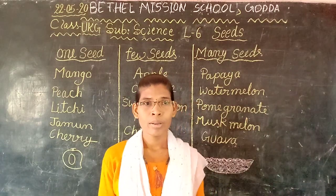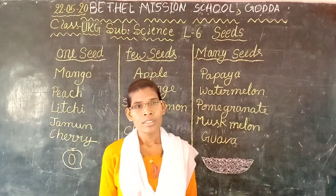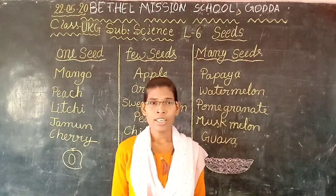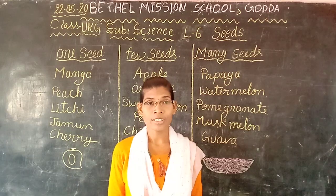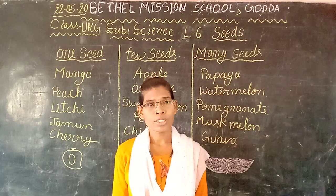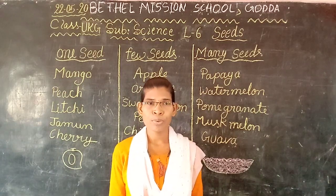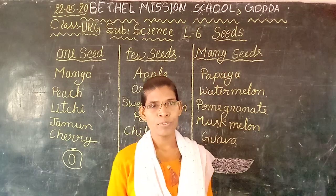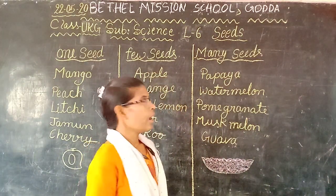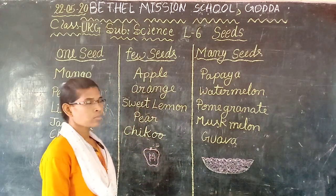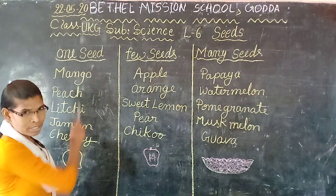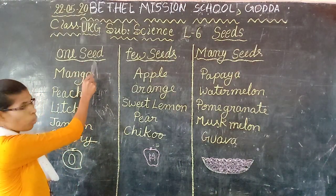Children, you have eaten many different kinds of fruits. Did you notice each fruit has different seeds? Some fruit has one seed, some fruit few, and some fruit many. So about the fruit's name we are going to learn and their seeds. Here we see first the one-seed fruit's names.